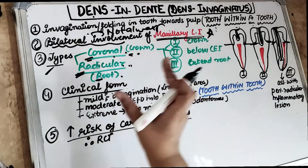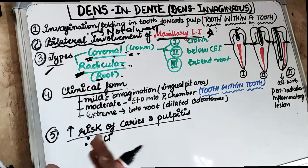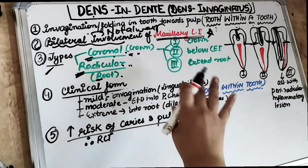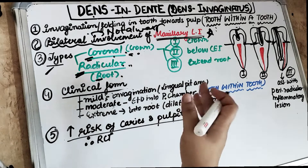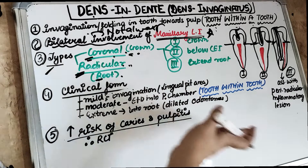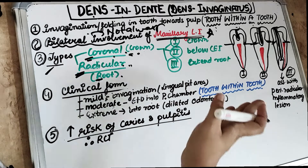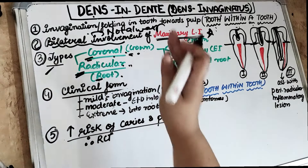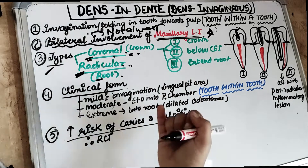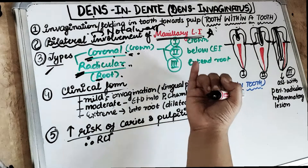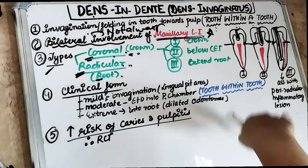Before the tooth is calcified, if trauma occurs, it leads to invagination developing towards the pulp. This invagination toward the pulp is what we call Dens in Denti.